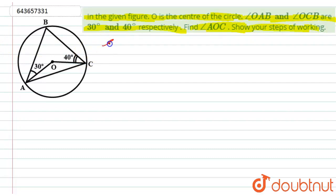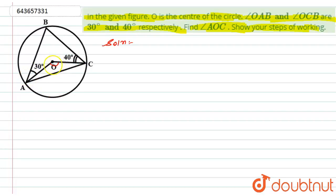Let us start with the solution. In this figure, we have a circle with center O. The angle OAB is 30 degrees and angle OCB is 40 degrees, and we have to find angle AOC — that is, this angle here.